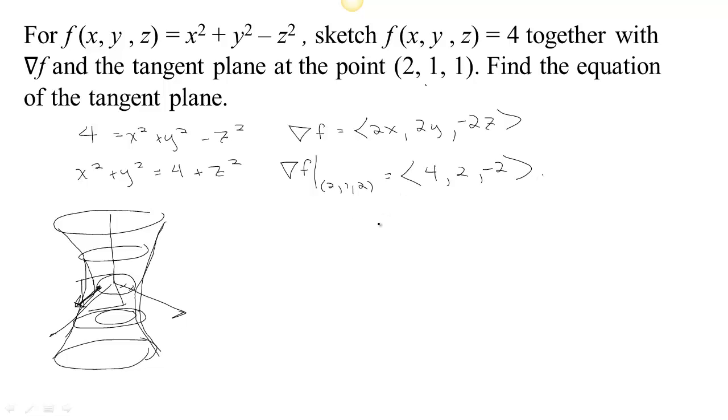Now, to get the equation of the plane, we have the normal. So there's our normal, (4, 2, -2). That's going to be our normal to the tangent plane. And we have a point on the plane, so we can get the equation.